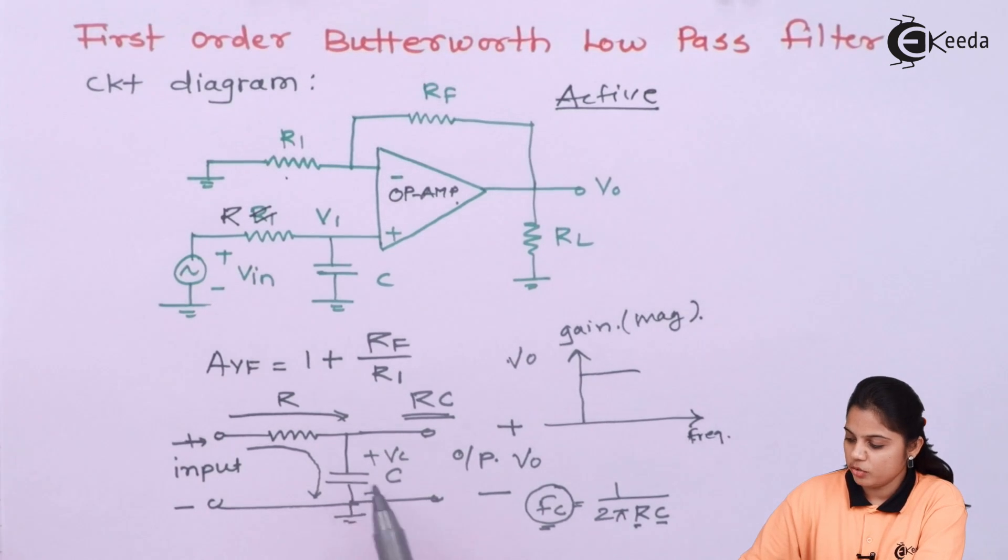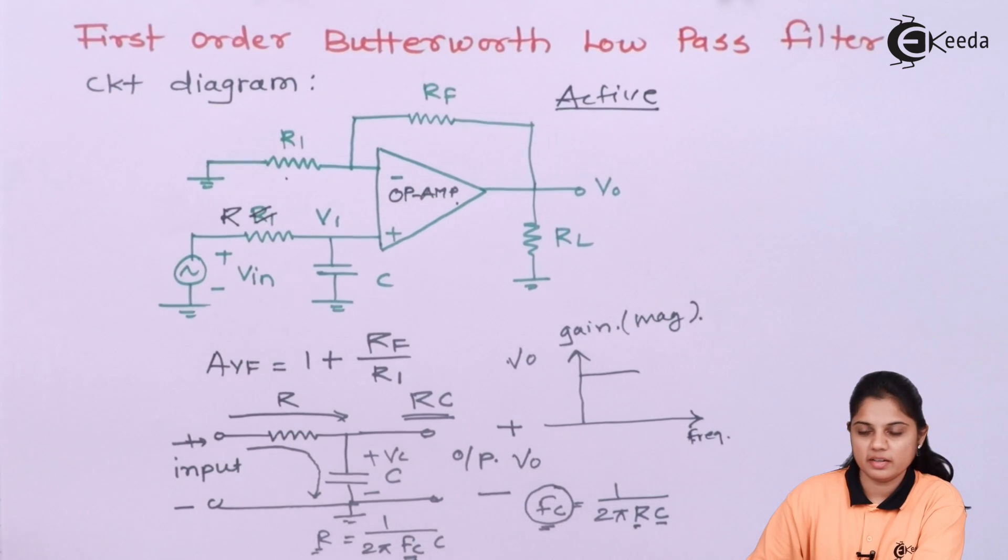So for the lower value of a frequency, if R and you can calculate R is equal to 1 divided by 2 pi FC into C. So for a lower frequency, R will be greater. Similarly, if you bring C over here and R over here, for a smaller value of a cutoff frequency, capacitor value will be large.